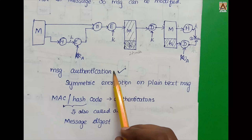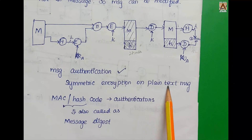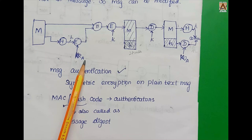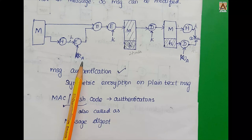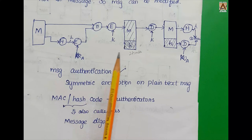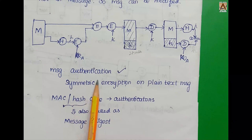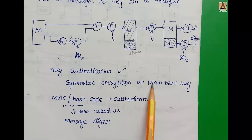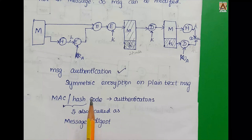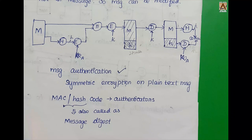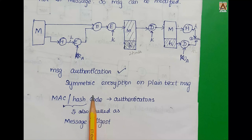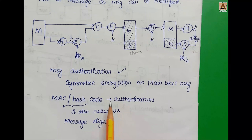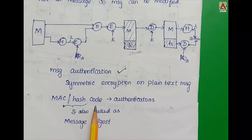This diagram uses symmetric encryption based on the plaintext message, combined with private and public key asymmetric encryption for the hash. In both Message Authentication Code and Hash Functions, a fixed-length code is generated as the authenticator, also called the Message Digest. These are the three types of authentication: Message Encryption, MAC, and Hash Functions.